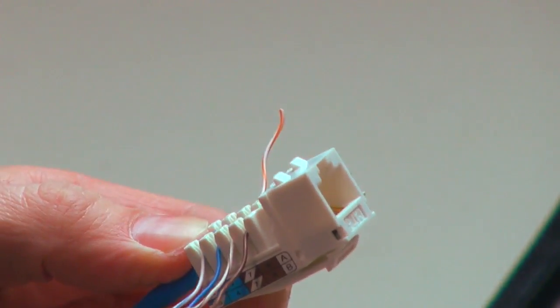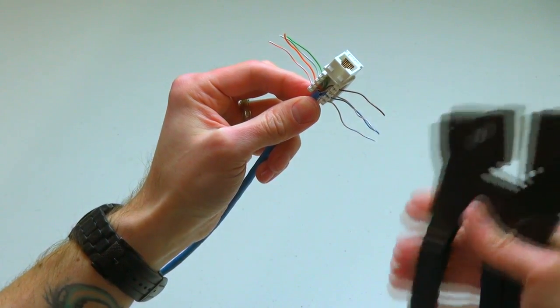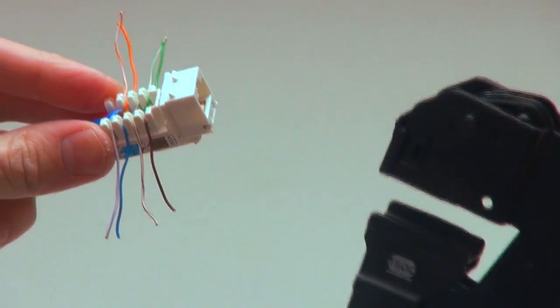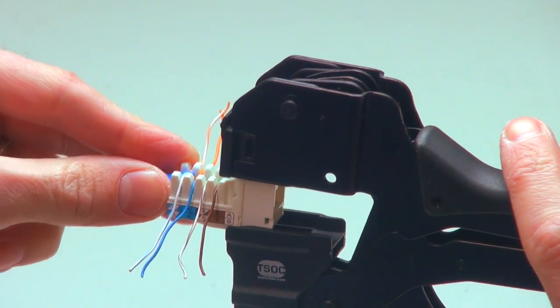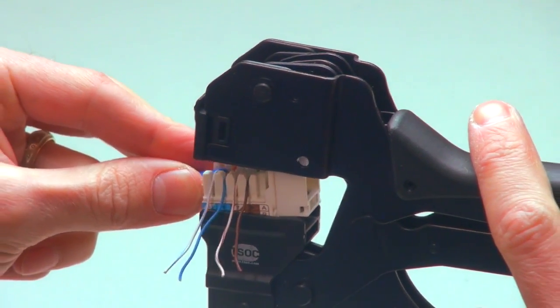Step 4: Place the Keystone module into the cavity of the Rapid Jack tool to punch down and cut all insulated conductors simultaneously. This will significantly reduce your installation time.